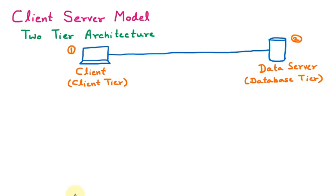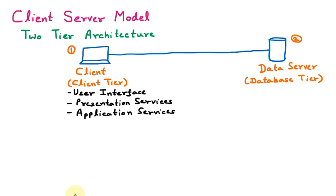These two tiers each have their own individual features. The client tier provides the user interface, presentation services, and application services. The user interface means how the user is going to interact with the system — for example, at an ATM machine you have multiple controls available, like clicking to collect cash. That interaction is called the user interface.